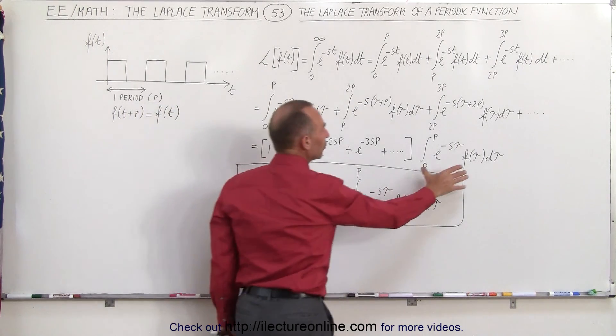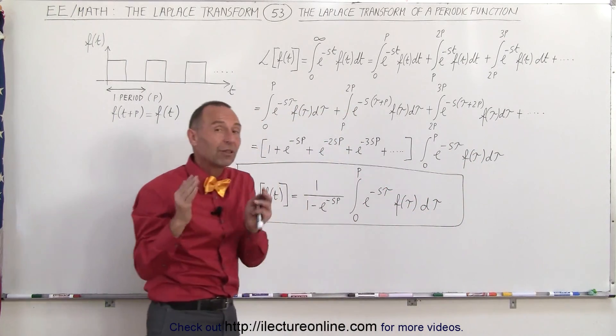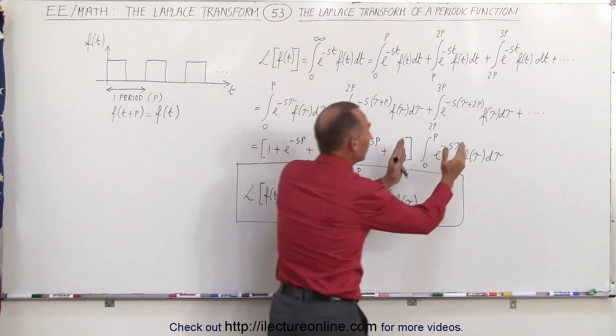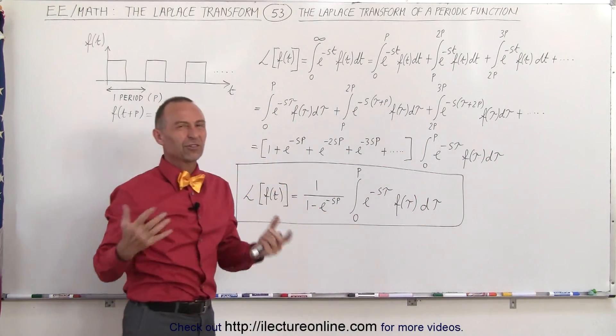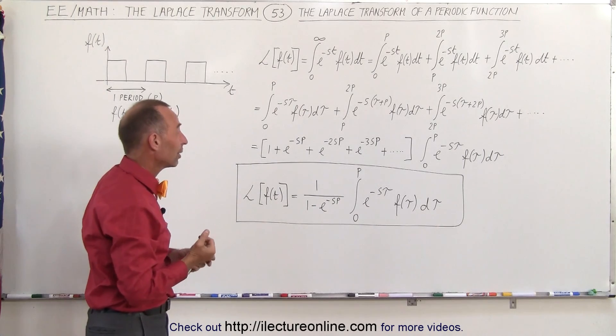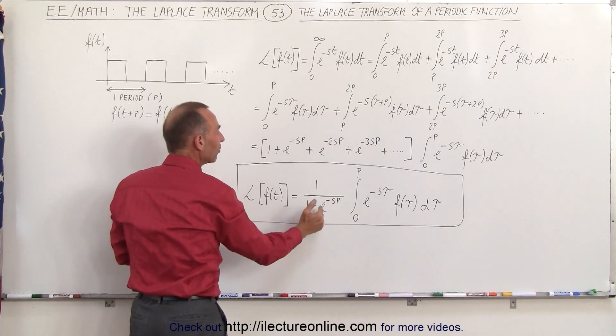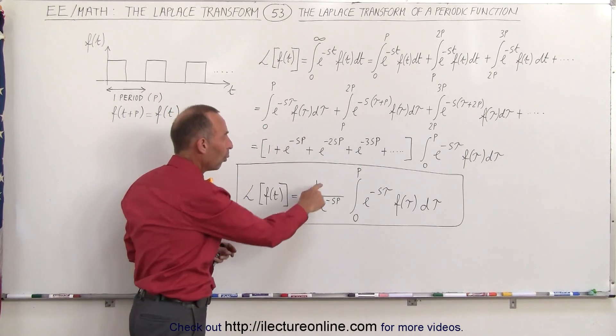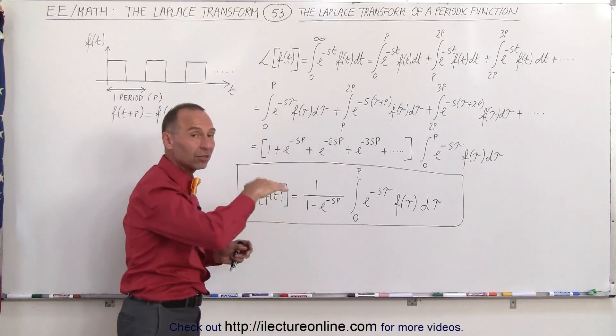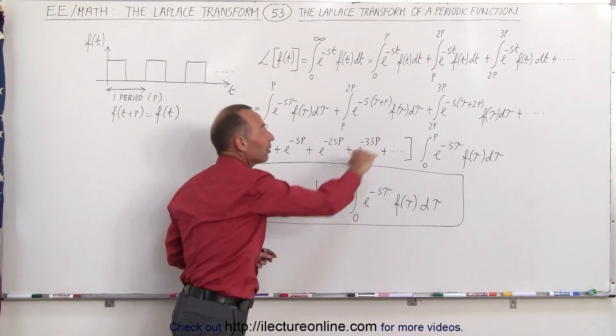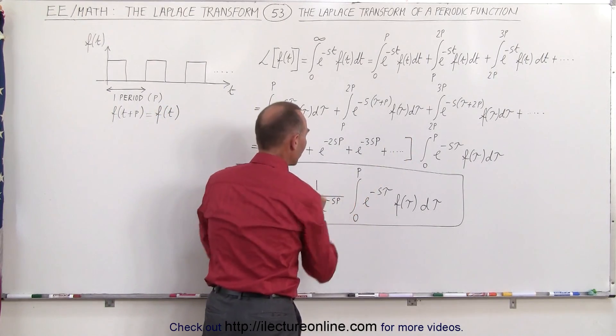Now when we look at this portion right here, this is the Laplace transform of any function, in this case the Laplace transform of just a single pulse, and if we then multiply it times this infinite series, well, infinite series are kind of hard to work with, but actually we can replace this infinite series by the quantity 1 over 1 minus e to the minus sp. If you take 1 and divide it by this binomial 1 minus e to the minus sp, and you work it out continuously, you'll get this entire infinite series. So in other words, we can replace this by just this quantity right here.